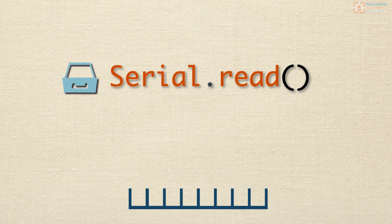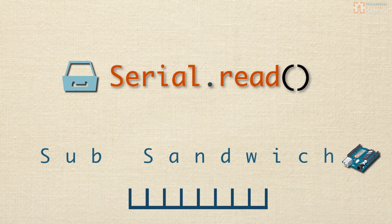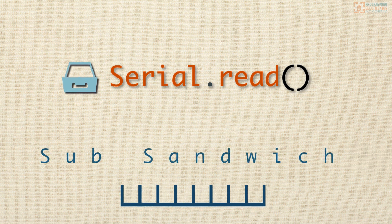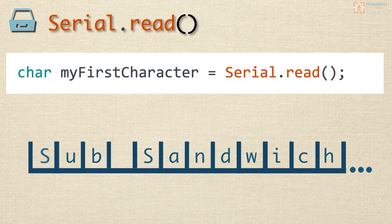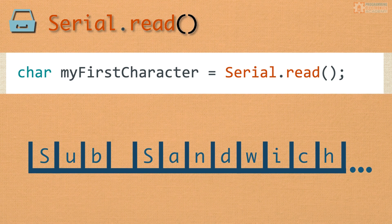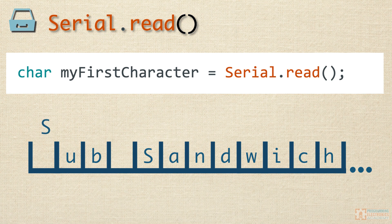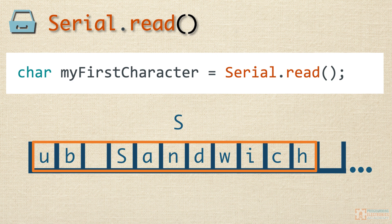Say you had sent the phrase 'sub-sandwich' to your Arduino — this means you would put 12 bytes into your serial receive buffer. Here we have a line of code saving to the variable myFirstCharacter the return value of Serial.read(). Serial.read() is going to return the first value available in the serial receive buffer, which in this case is a capital S, and it would leave 'ub-sandwich' in the serial receive buffer.